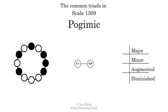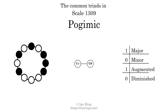Here are the common triads present in this scale. The diagram in the center is a graph of parsimonious voice leading between triads. There is one major triad. There are no minor triads. There is one augmented triad. There are no diminished triads. Here is a Hamiltonian path of parsimonious voice leading that uses all the triads.